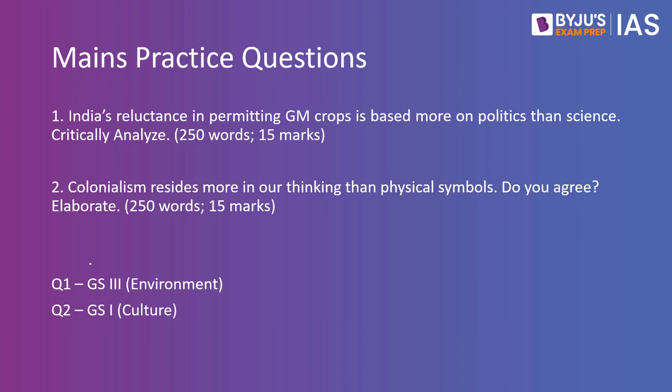These are the important articles from The Hindu newspaper today. Now, two practice questions. Number one: India's reluctance in permitting GM crops is based more on politics than science — critically analyze. Number two: Colonialism resides more in our thinking than in physical symbols — do you agree? Elaborate. Both questions are to be answered within 250 words each. Thank you so much for watching. Have a good day ahead.